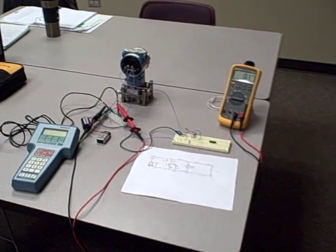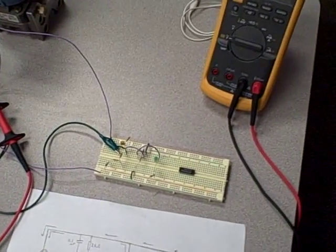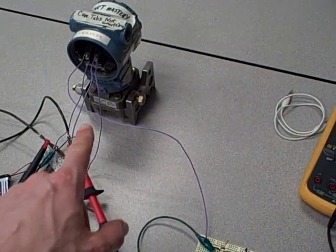Here we're going to see a demonstration of a student's extra credit project. It's a circuit that visually indicates HART communications for a smart transmitter.